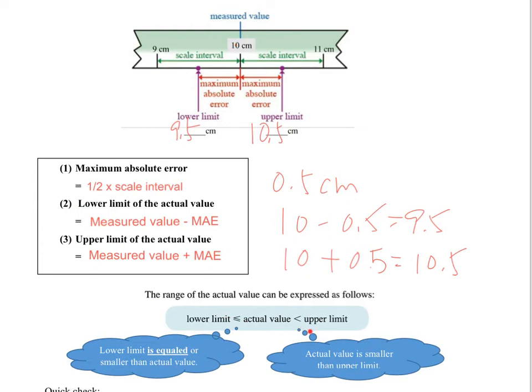But unfortunately, for upper limit, we cannot say it can be equal to 10.5. 10.5, if I round off, that would become 11 instead of 10. So I would say it is smaller than the upper limit. So it can be nearly, almost become 10.5, but it cannot. So there's no equal sign in between.